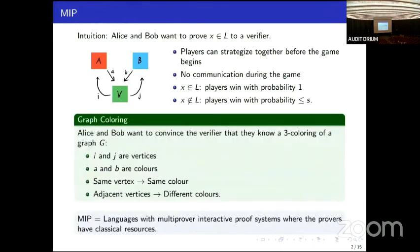Usually we think of these as having one round of interaction and two provers, Alice and Bob, but we can imagine having more provers and more rounds. We'll specialize to the two prover one round situation in this talk. An example of such a scenario is the graph coloring game where Alice and Bob want to convince the verifier they know a three coloring of some given graph G. I and J are vertices, the answers A and B are colors. If the players are asked the same vertex, they must respond with the same color, and adjacent vertices they must respond with different colors.